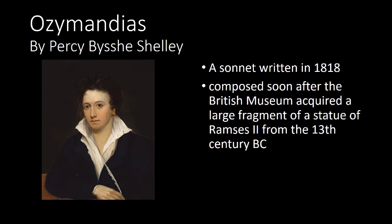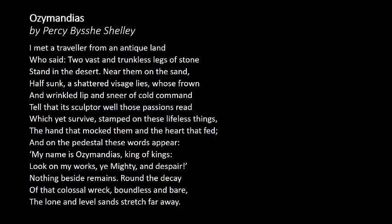Now we have the poem Ozymandias, written by Percy B. Shelley in 1818. Documents tell us that Shelley composed it soon after the British Museum acquired a large fragment of a statue of Ramses II from the 13th century BC. The name Ozymandias is the same as Ramses II — it is said that Ramses II was also called Ozymandias, and was the same Pharaoh during the time of Moses. You might also be familiar with Shelley through Mary Shelley, his wife, who wrote Frankenstein.